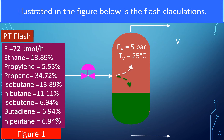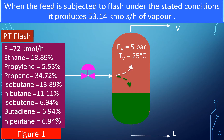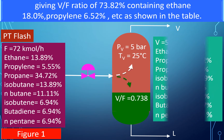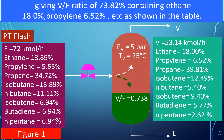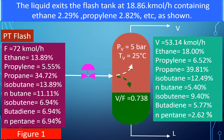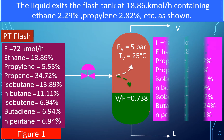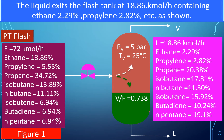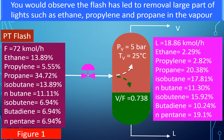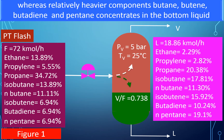Illustrated in the figure below are the flash calculations. When the feed is subjected to flash under the stated conditions, it produces 53.14 kmol/h vapor, giving a V/F ratio of 73.82%, containing ethane 18%, propylene 6.52%, etc., as shown in the table. The liquid exits the flash tank at 18.80 kmol/h, containing ethane 2.29%, propylene 2.82%, etc. You would observe that the flash has led to removal of a large part of the light components — such as ethane, propylene and propane — in the vapor, whereas relatively heavier components like butane, butene, butadiene and pentane concentrate in the bottom liquid.